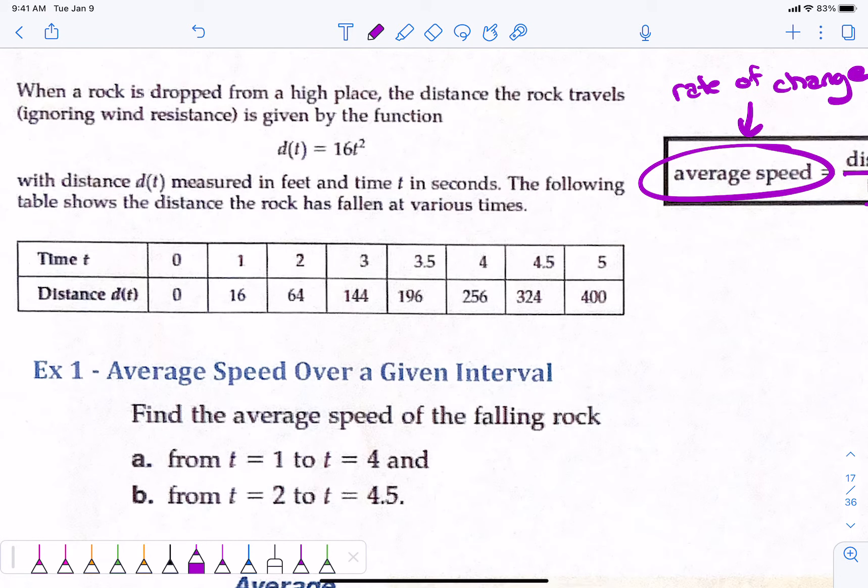When a rock is dropped from a high place, the distance the rock travels, ignoring wind resistance, my physics folk, is given by this function. So the distance that it travels is 16t squared. If it's been falling for one second, it's fallen 16 feet. If it's falling for two seconds, it's fallen 64 feet. If it's fallen three seconds, it's 144 feet, etc. So they've plugged those numbers into this equation to get this table.